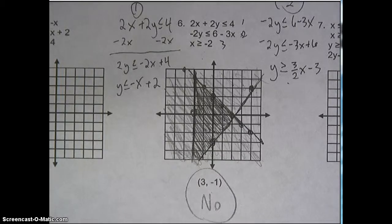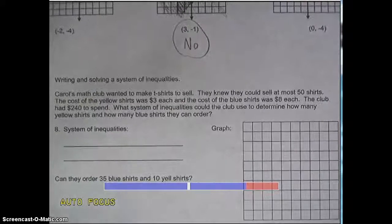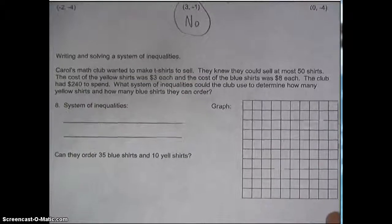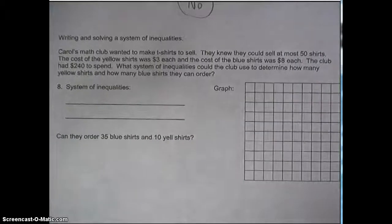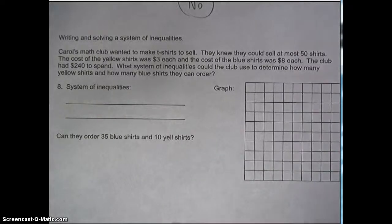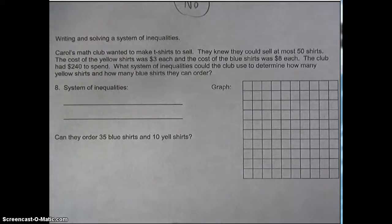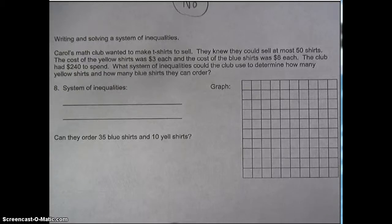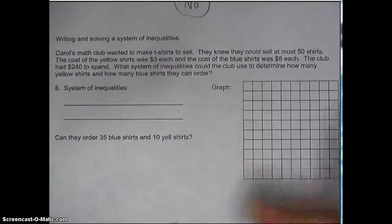The last thing I want to talk about is this word problem. I'm not going to graph this one, but I am going to help you write the inequality. Carol's Math Club wanted to make T-shirts to sell. They knew they could sell at most 50 shirts. The cost of yellow shirts was $3 each, and the cost of blue shirts was $8 each. The club had $240 to spend. We need to write a system of inequalities to determine how many of each shirt they can order.